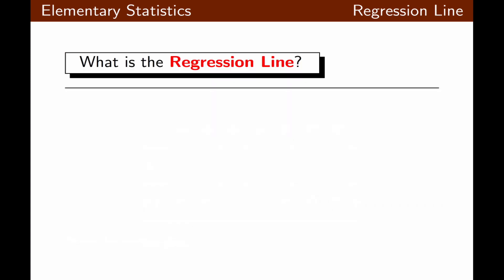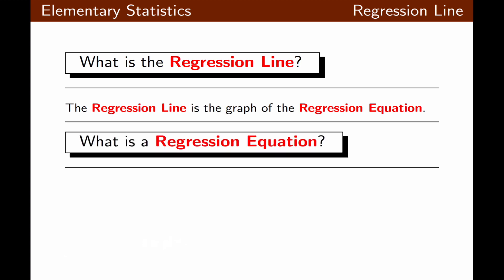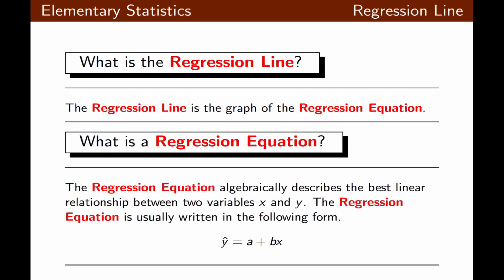What's a regression line? The regression line is the graph of the regression equation. The regression equation describes the best linear relationship between the two variables x and y. It is usually written in the form y-hat equals a plus bx, which is very similar to the slope-intercept form of a linear equation in two variables.